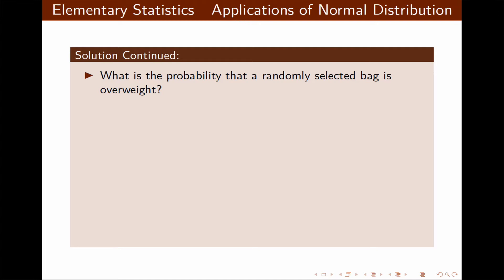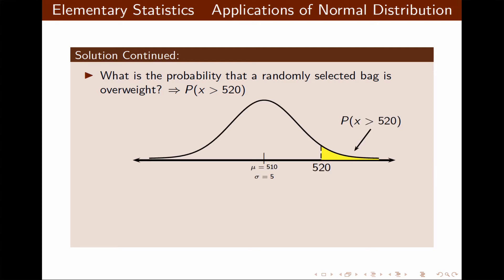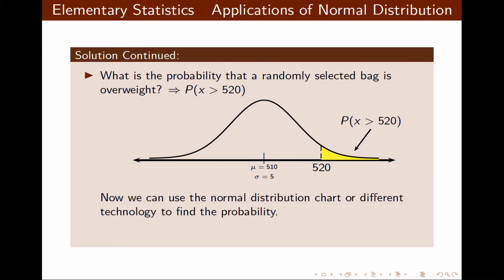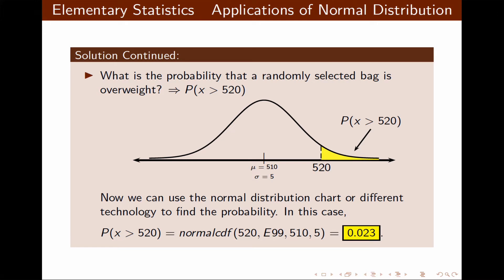What's the probability that a randomly selected bag is overweight? A bag is considered overweight if it weighs more than 520 grams. We find the shaded area representing the probability that X is greater than 520. Using normalcdf from a TI command, that probability is 0.023.